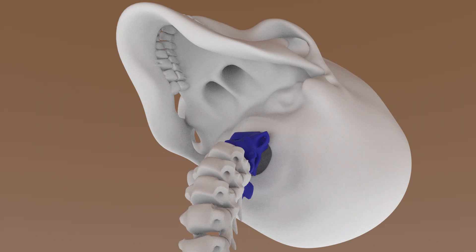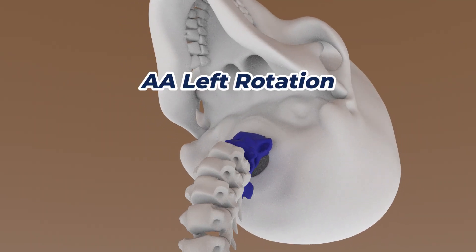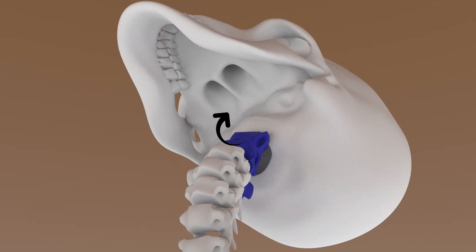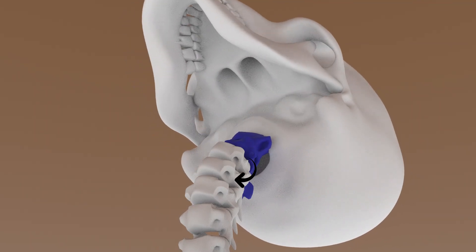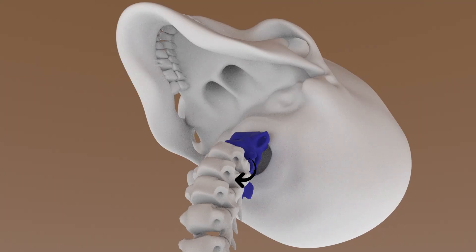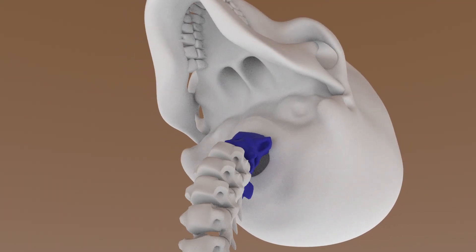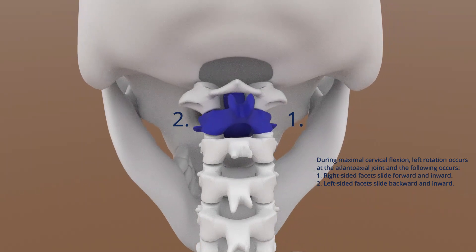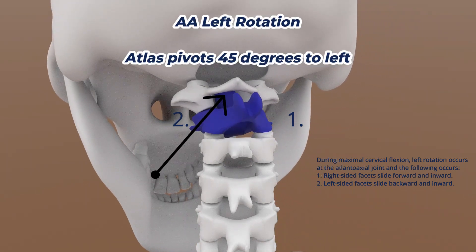The opposite occurs with atlanto-axial left rotation during left neck rotation. The right-sided inferior facets of the atlas slide forward and inward, while the left-sided inferior facets of the atlas slide backward and inward. The atlas also pivots 45 degrees to the left.